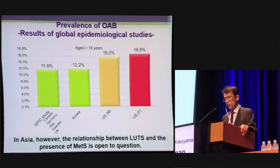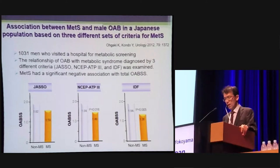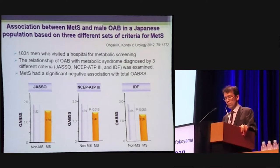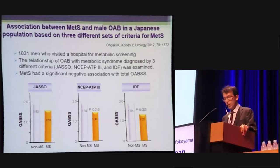However, the relationship between LUTS and the presence of metabolic syndrome is open to question. In Japan, metabolic syndrome was found to have a negative association with LUTS. The relationship of OAB with metabolic syndrome was examined in 1,000 men who visited the hospital for metabolic screening. The OABSS was significantly lower in patients with metabolic syndrome than in patients without metabolic syndrome; therefore, metabolic syndrome had a significant negative association with OAB.